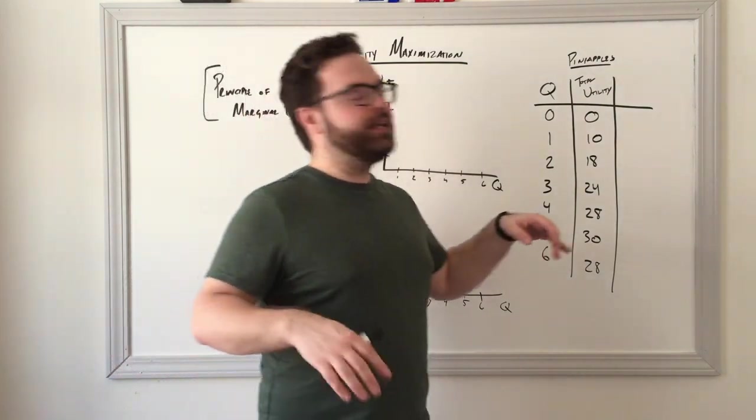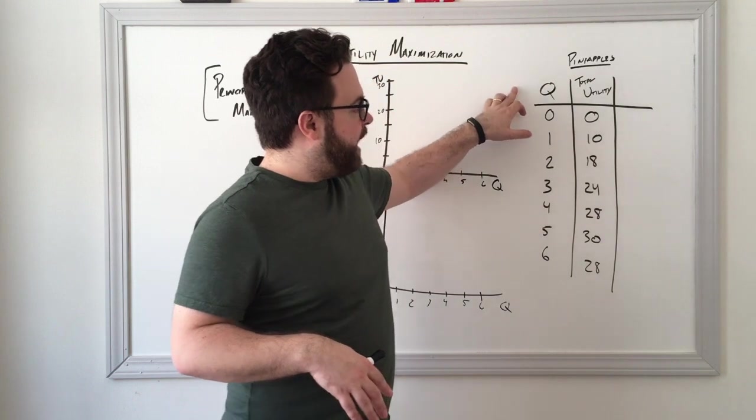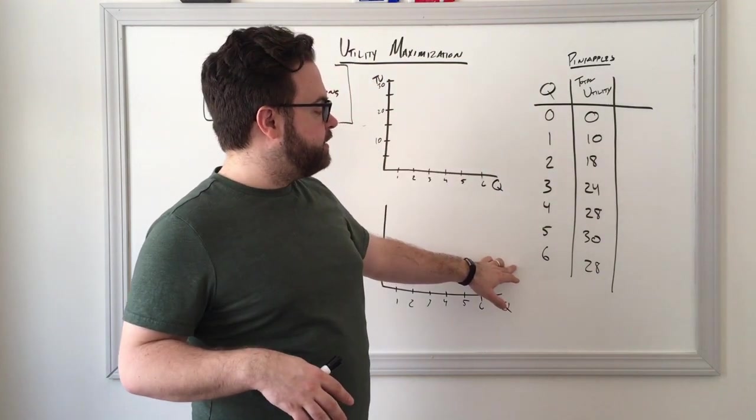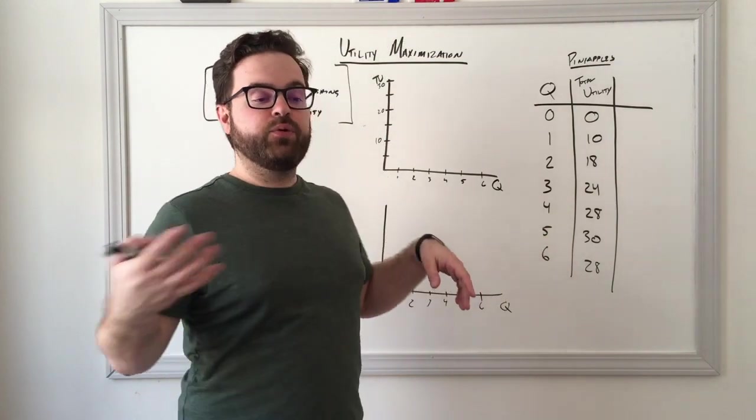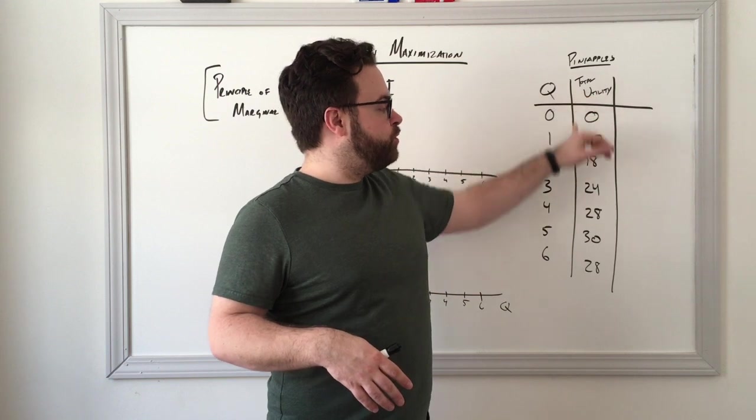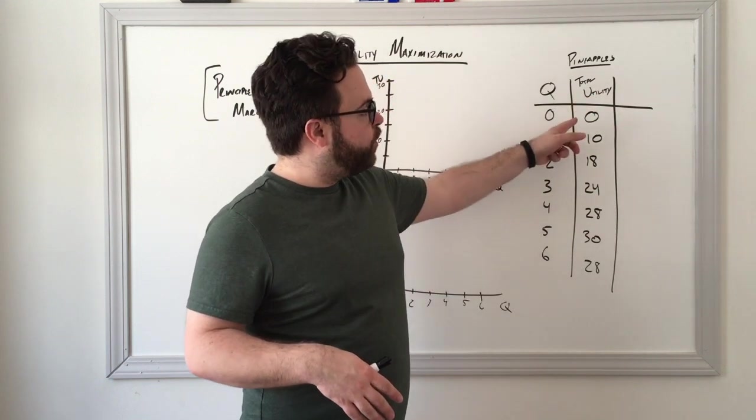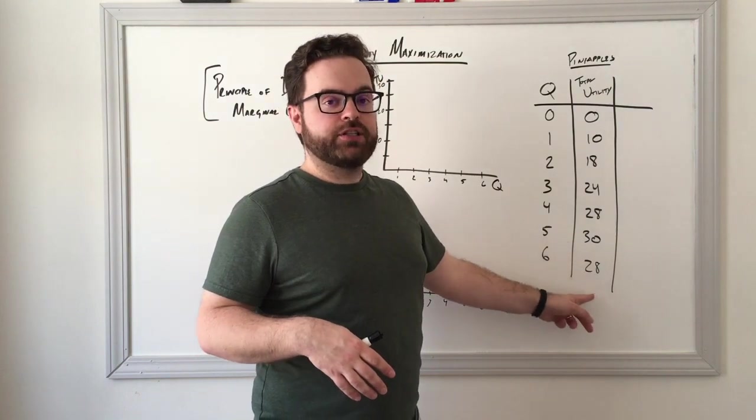So let's say we're eating cups of pineapple and we could have anywhere between zero and six cups of pineapple. We want to think about what's the total amount of utility we're getting out of each cup, so we can have their total utility. Notice the total utility goes up until the fifth cup and then starts coming back down.